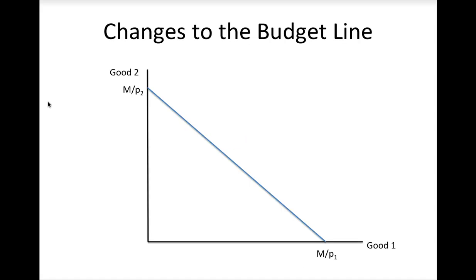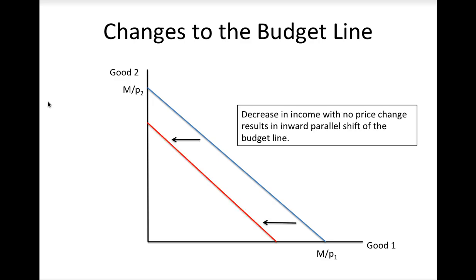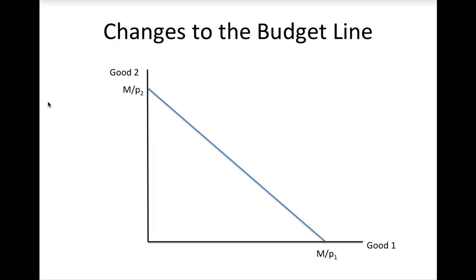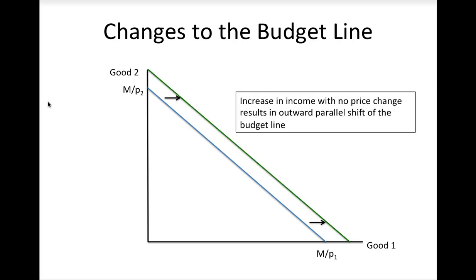Now that we have established the basic model, we can analyze how changes in prices and income affect the budget line and budget set. If a consumer's income falls but prices remain unchanged, the slope of the budget line will not change, but the consumer cannot buy as much of each good. Thus, a decrease in income results in a parallel inward shift of the budget line and the budget set is smaller. Similarly, if income increases but prices remain the same, the result is an outward parallel shift and the budget set is bigger — which makes intuitive sense, because when your income goes up, you can afford to purchase more things.